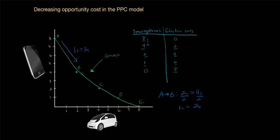What about between B and C? From B to C, the country gained two more electric cars and in this case it gave up two smartphones. So two cars cost two smartphones — that's a cost of one smartphone per car. From B to C, one car costs one smartphone. The opportunity cost of cars in terms of how many smartphones are given up has decreased.